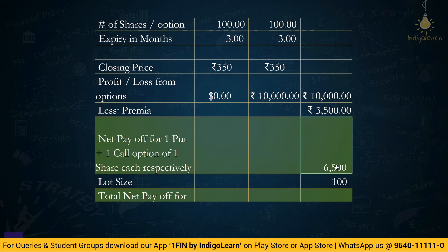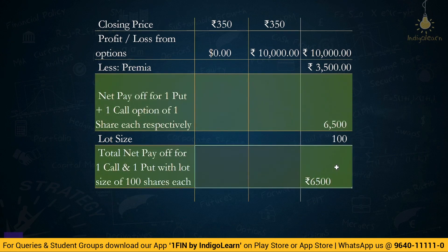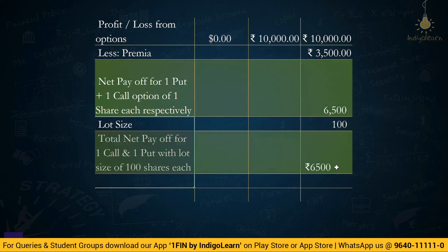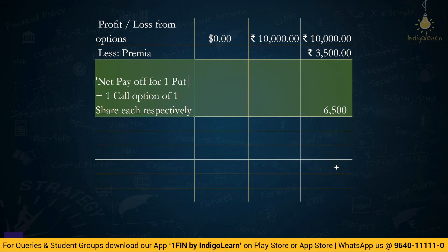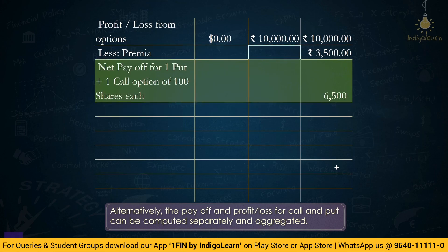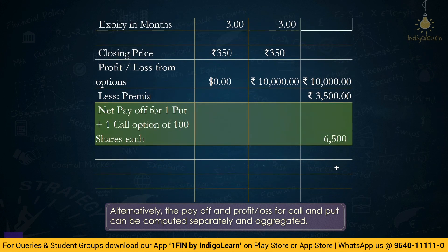You can either keep the lot size separate and multiply at the end, or incorporate it directly from the start — whichever method you are comfortable with. If you tend to forget lot sizes, compute everything per share first and then multiply. We did the same thing with futures. The answer for this problem is Rs. 6,500 — a simple question; just remember where to put what.